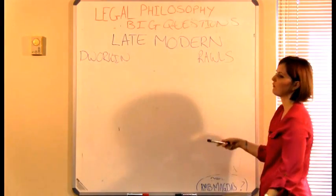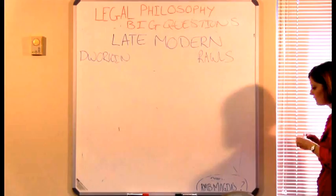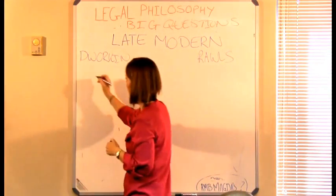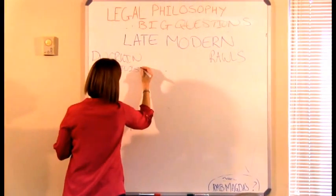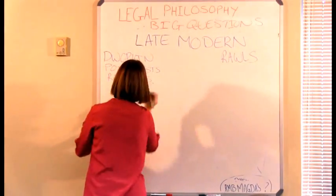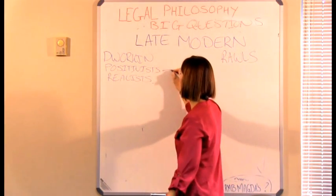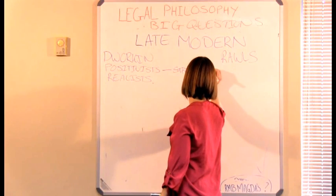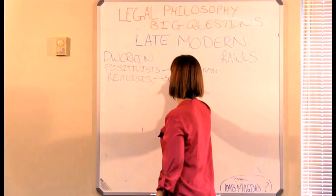Dworkin is concerned about the positivists and the realists. He says if we just take the positivists' idea, then the law is too strict, too formal. But if we take the realists' idea, then the law is too subjective.